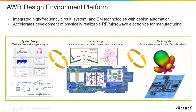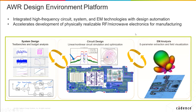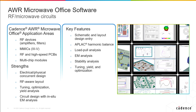EM analysis is more for getting S-parameters out of an electromagnetic solver. The two electromagnetic solvers we currently have are AWR Axiom, which is a 2.5D/3D planar method-of-moments solver, and AWR Analyst, which is a 3D finite element method solver. One thing I'll mention here is tuning, optimization, and yield analysis — we'll touch on optimization quite a bit in this presentation.